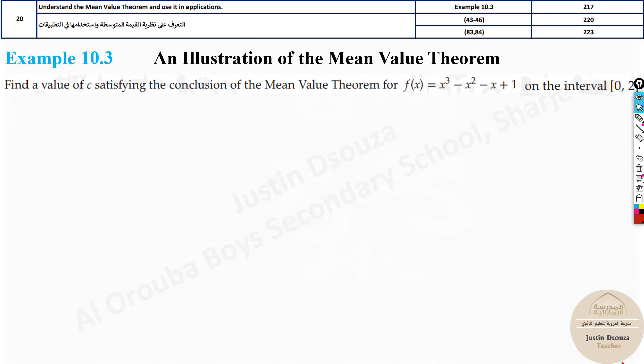Here they have told to apply mean value theorem. We need to find a value c that satisfies the conclusion of mean value theorem for this particular function on the interval 0 to 2. Now we will solve this problem. The first condition, whether it is continuous. First one, it's continuity. Continuous. Second one, differentiability. Differentiable. Let's check.